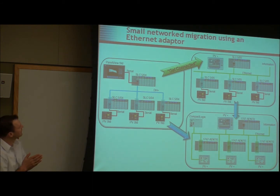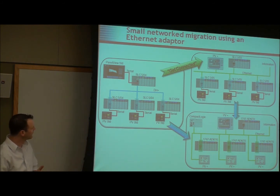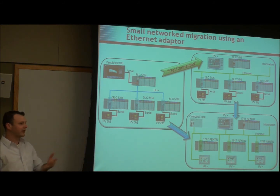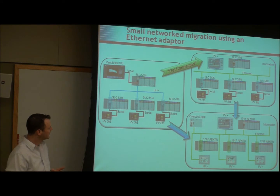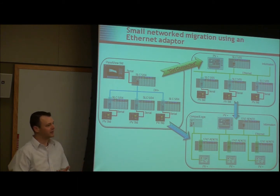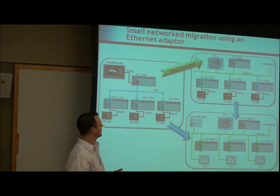There are a couple of different paths you can take. You can do it all at once — take all your SLC I/O, put in your ANTRs, and build an Ethernet network off of that. We talked about risk mitigation, though — doing everything at once is not necessarily your best option. Another way to mitigate risk is to go from the SLC 504 to the 505; you're not really changing a program that way.